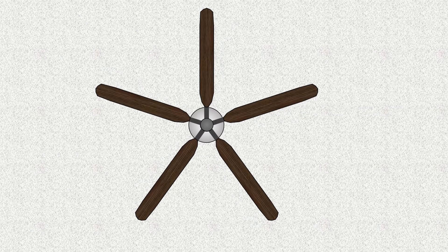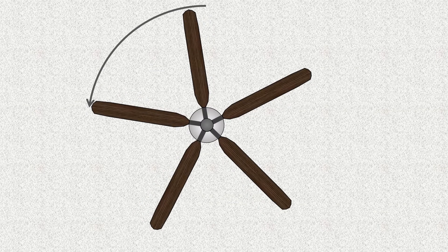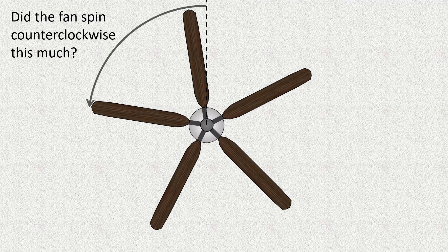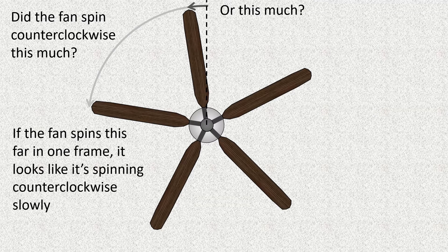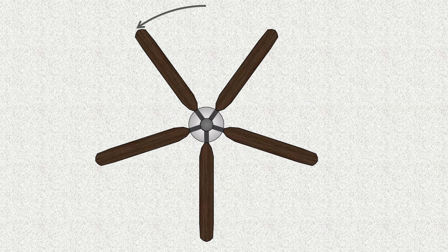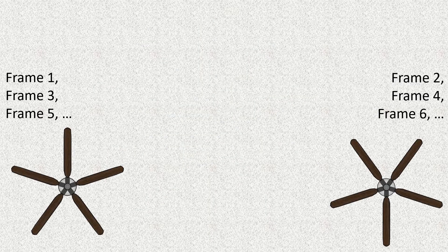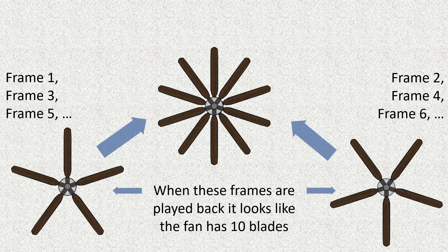Now look at what happens when the fan is moving a little bit faster. Here the blade at the top moves just past the position of the next blade between frames. Since we can't tell one blade from another, this looks like the fan is spinning slowly counterclockwise. Next, look at what happens when the fan spins so that the blade goes halfway from one blade to the next between frames. Half of the frames would look like the image on the left, and half would look like the image on the right. When these are played back, it looks like the fan has ten blades instead of five.